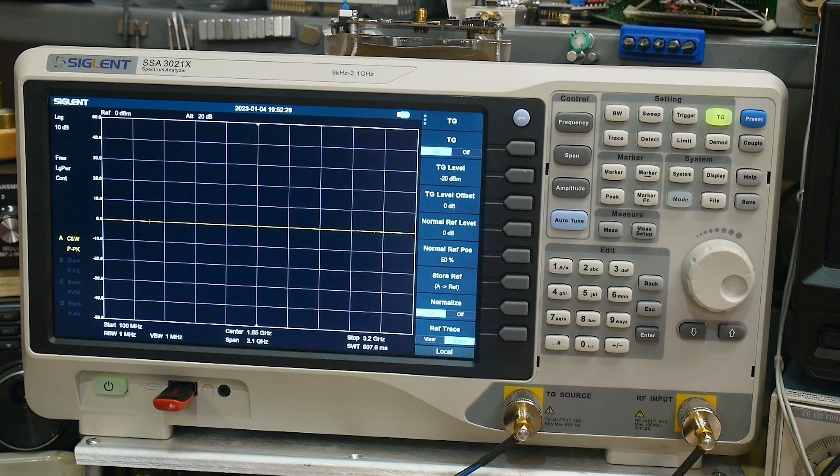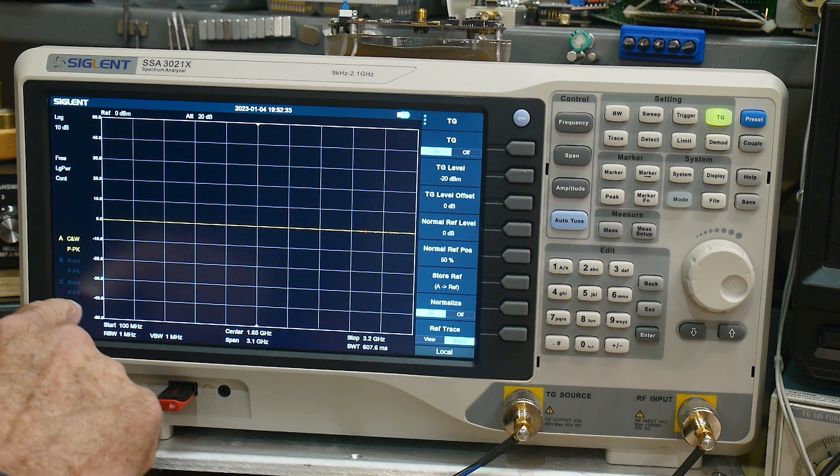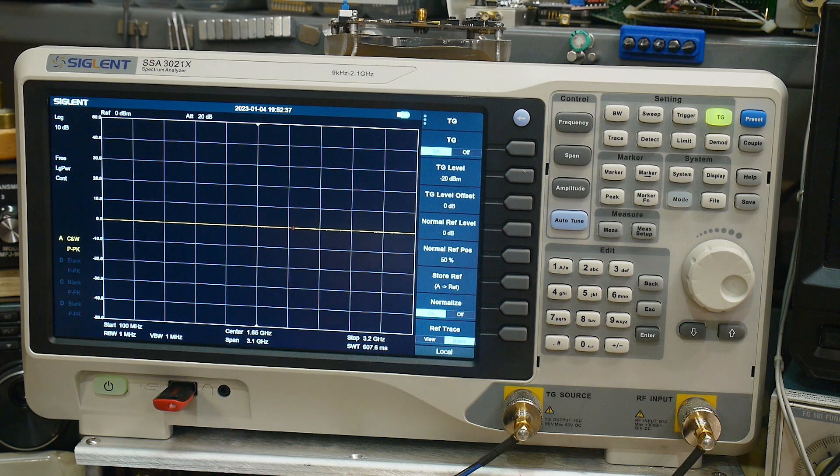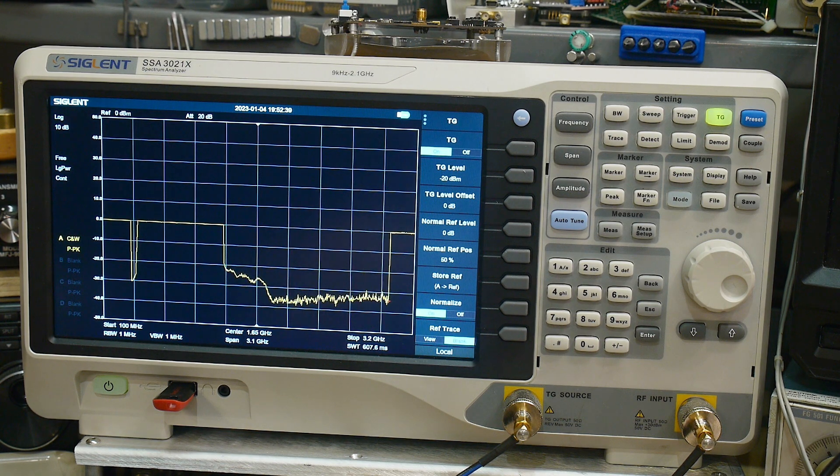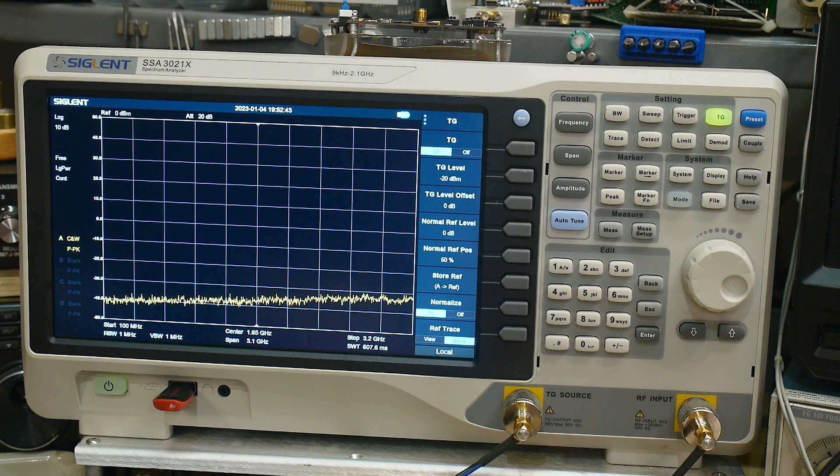Now we're normalized. Instead of dBm over here, we now have dB. So now we're relative. Everything is a relative measurement from now on. If you have the signal going straight through, it's zero dB.